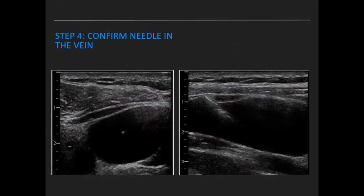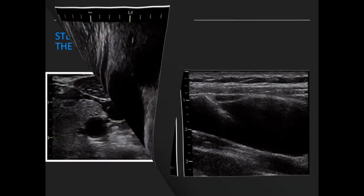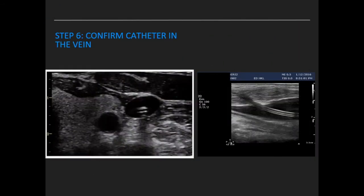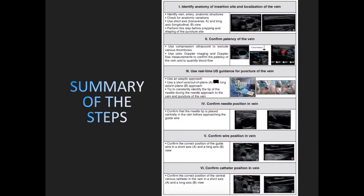After anatomical identification of the insertion site and confirmation of vein patency, cannulate using real-time ultrasound guidance. Then confirm the needle in the vein, confirm the wire in the vein, and confirm the catheter in the vein. In summary: identify anatomy and localize the vein, confirm patency, use real-time ultrasound guidance for puncture, confirm needle position, confirm wire position, and confirm catheter position.